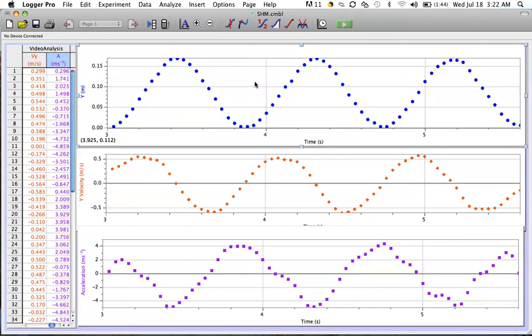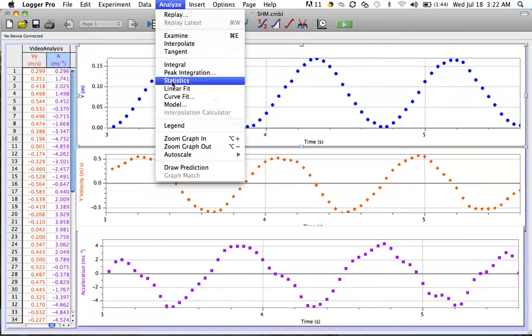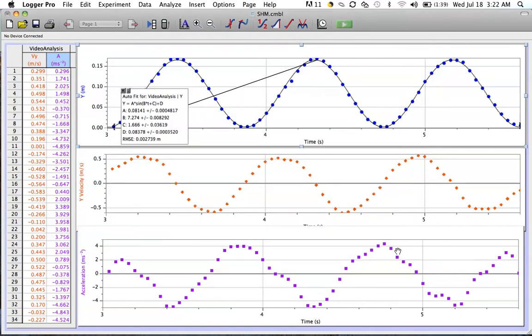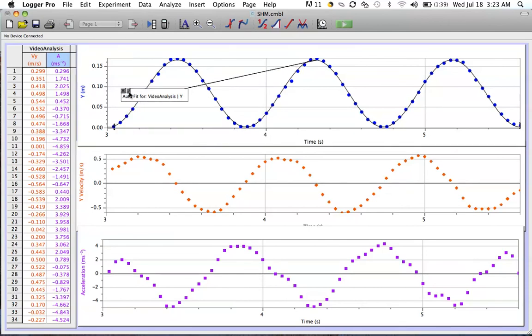And for each of these now I'll add a line of best fit. So I'll go to Analyze and choose a curve. And since it is a sine function, we'll choose sine and click OK. And you can see that that line fits our data quite well.